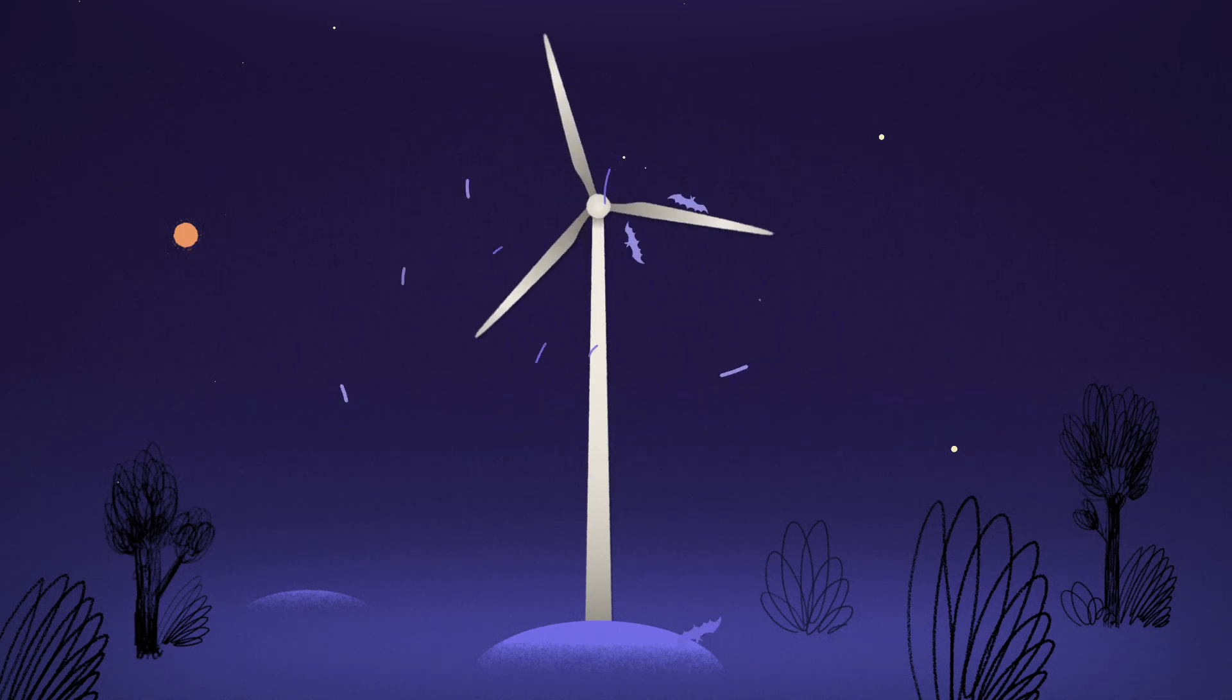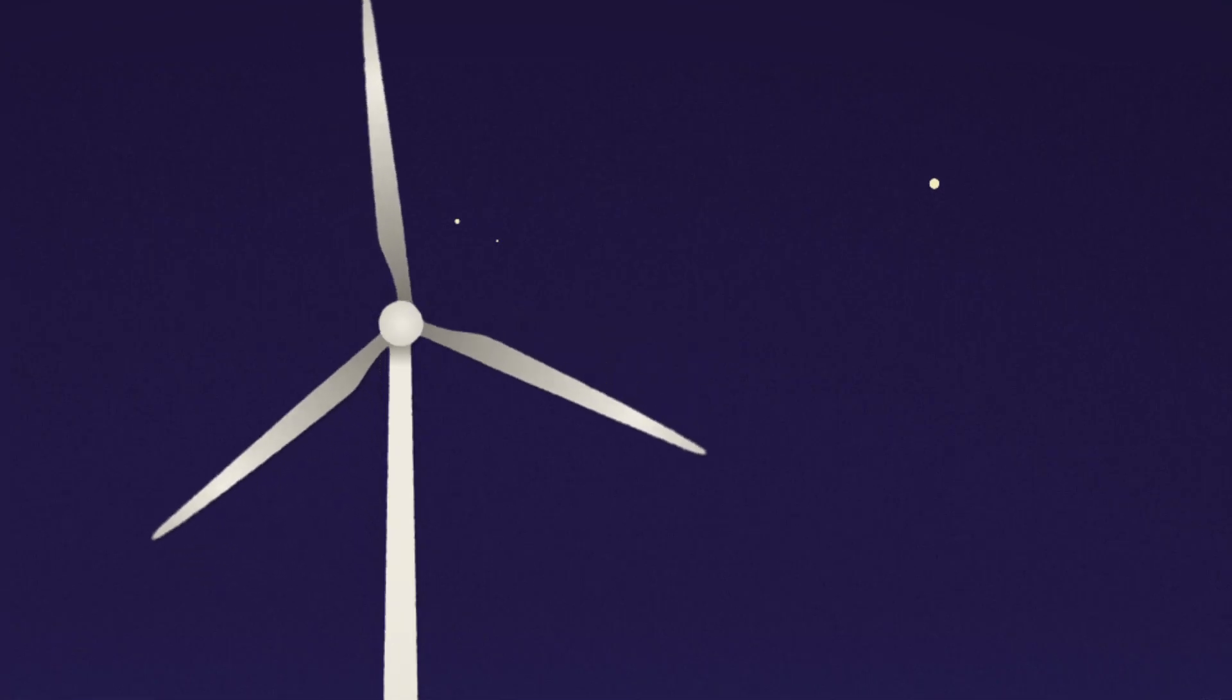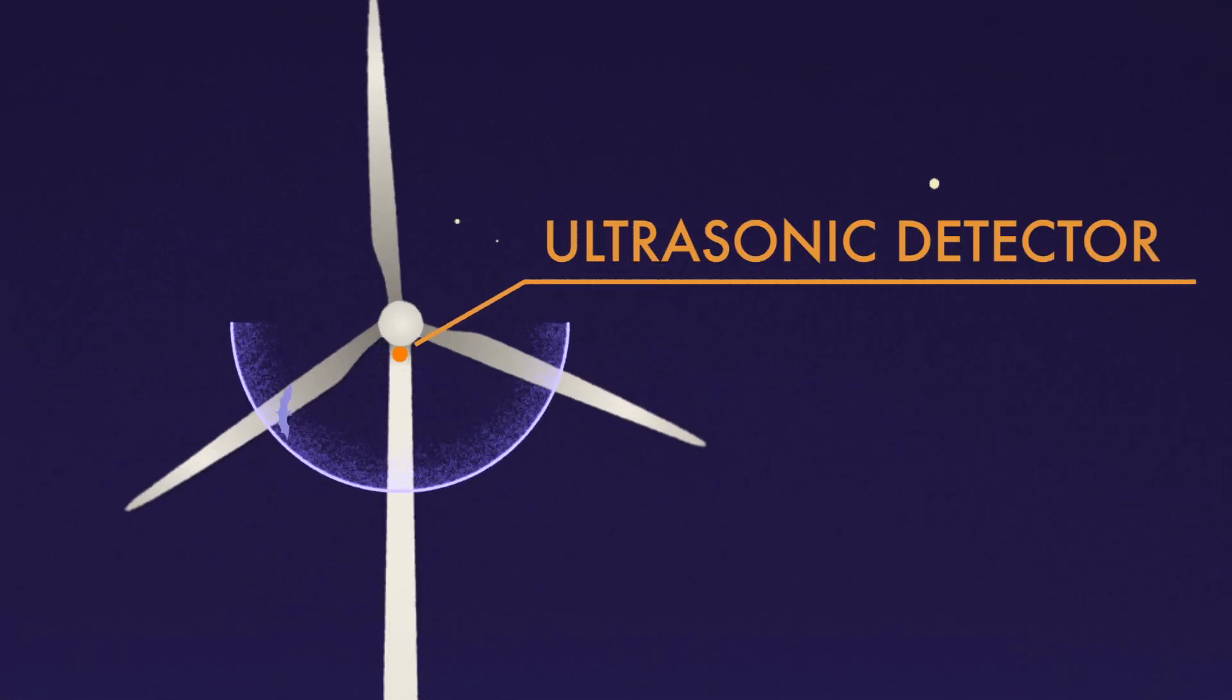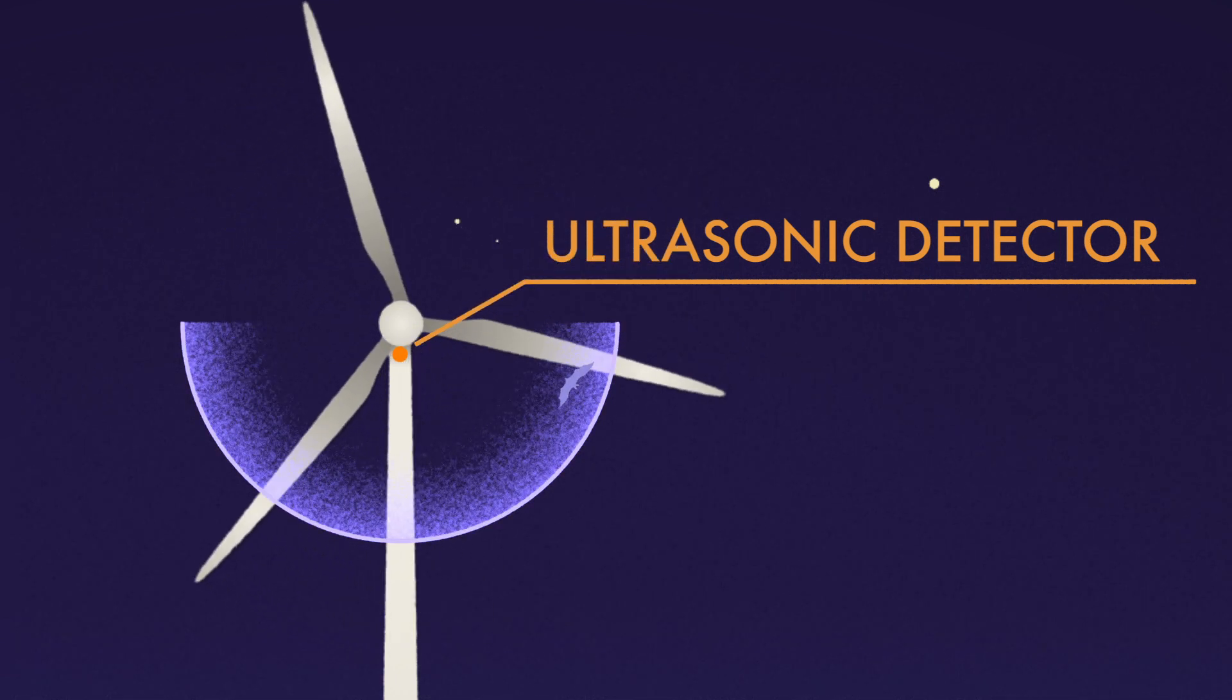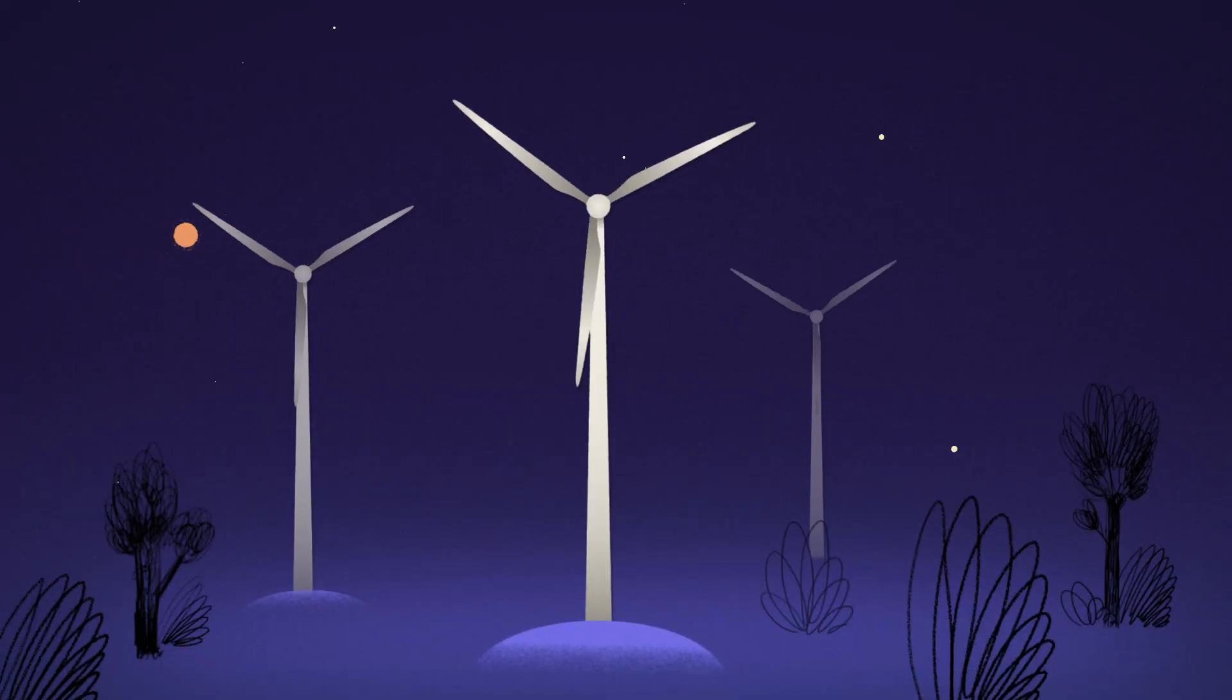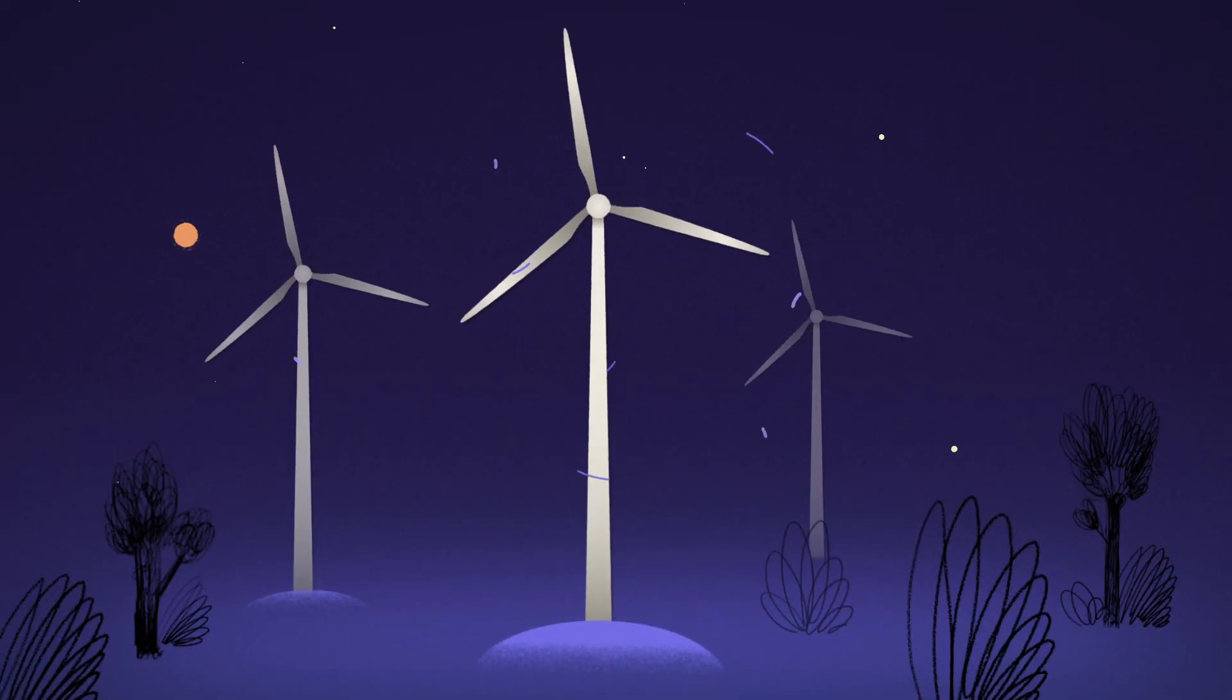To ensure that wind energy production does not come at the expense of wildlife conservation, ultrasonic detectors are being used to record the acoustic activity of bats. Subsequently, regulations are drawn up that restrict the operation of wind turbines during periods of particularly high bat activity.